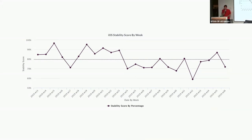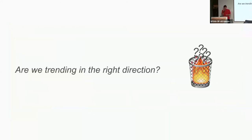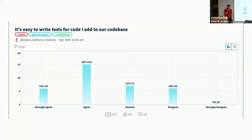Another contributing factor is that our iOS build stability is not great. Our tests are rather flaky, and you can't really have confidence if builds are failing all the time. We also measure how easy it is to write and add tests to our code base — doing okay on that. One frequent comment is: 'It's easy to write tests for new code, but legacy code is super hard.' So the legacy code problem is one we will need to tackle at some point.